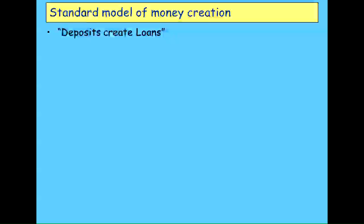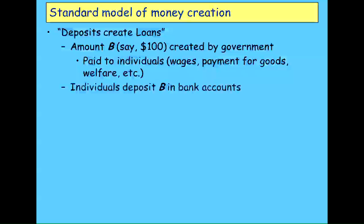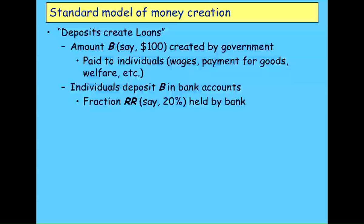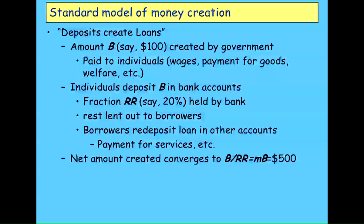This is the 'deposits create loans' model. With $100 of base money created and paid to individuals, those individuals deposit the money in bank accounts. If the bank must hold 20% in reserve, it can lend out the remaining 80%. The borrower then redeposits that money back in the banking system. Ultimately, the total amount of money in the system converges to the base money divided by the reserve ratio — or multiplied by the money multiplier — giving $500 in this case. That's the fractional banking model.